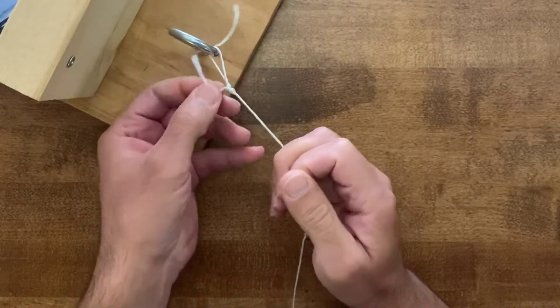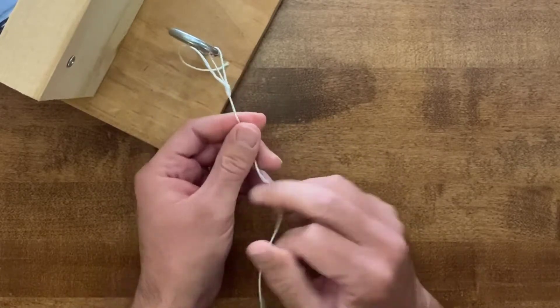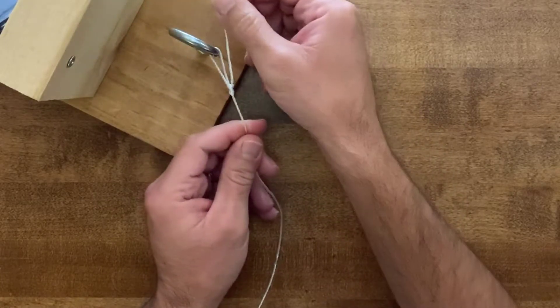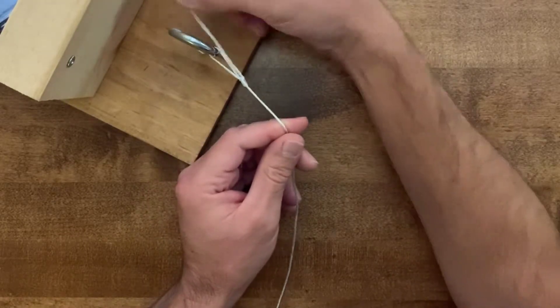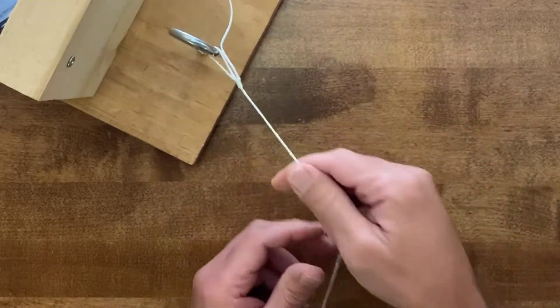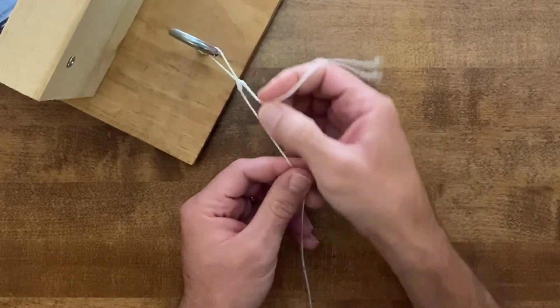There you go - you've got a perfect non-slip loop knot. One of the great things about this tag is you'll notice the tag is pointing back toward the lure, so as you're pulling the lure through the water this tag end isn't going to be catching.